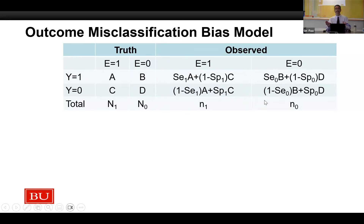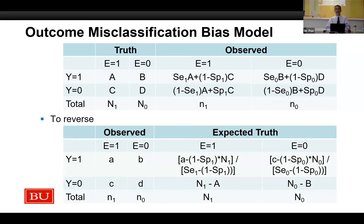Imagine we lived in a world where we knew the truth. I've got my exposure across the top, my outcome on the side, and I've classified the cells of the two-by-two table for the truth with capital letters. The observed data, if I have misclassification, just looks like this: A times the sensitivity are correctly classified as having the outcome; A times one minus the sensitivity are misclassified as not having the outcome. C times the specificity are correctly classified as not having the outcome; one minus the specificity times C are incorrectly classified as having the outcome. I can do the same for the unexposed group if sensitivity and specificity differ across arms. I can algebraically rearrange to get the truth from observed data. These are formulas that were worked out in the 1960s.